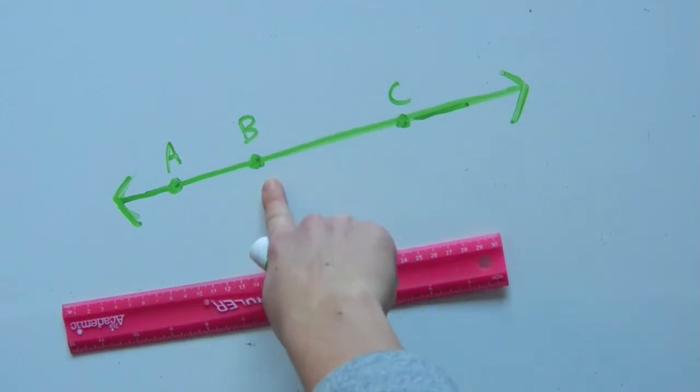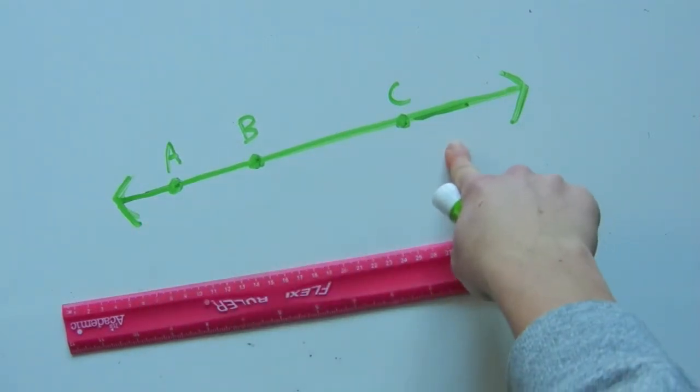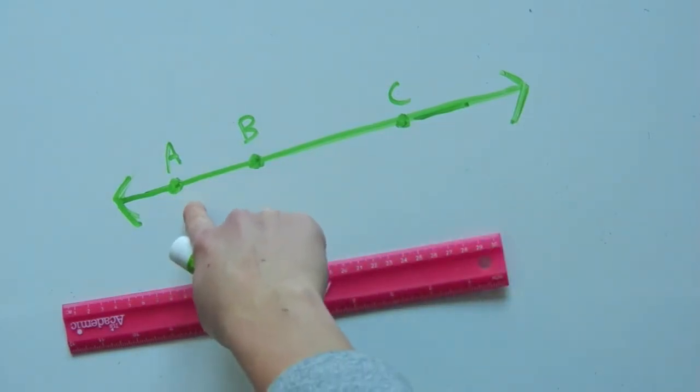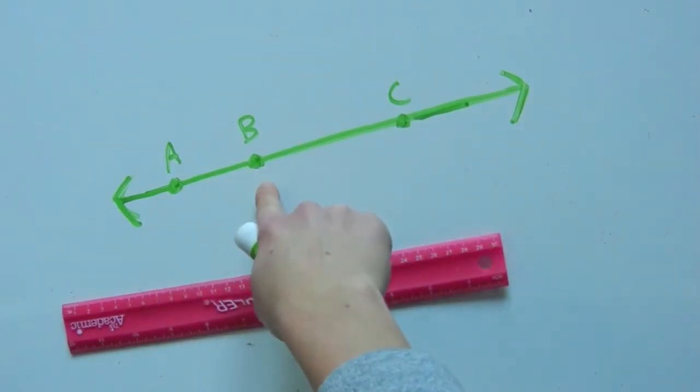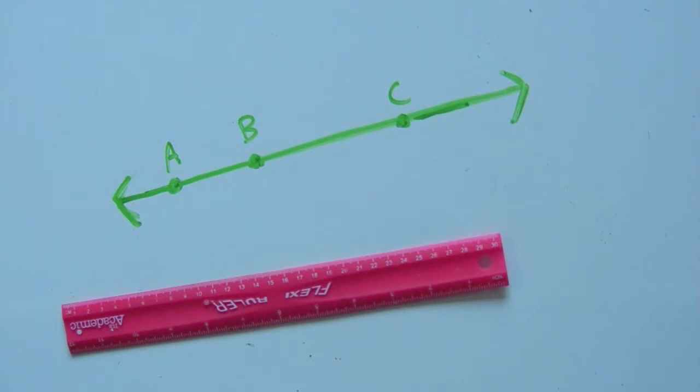Looking at this we can see that A, B, and C are all collinear. Now we just need to test does the length AB plus the length BC equal the length AC. And visually we can already see that's true. So we know that the point is between, but let's show that mathematically.